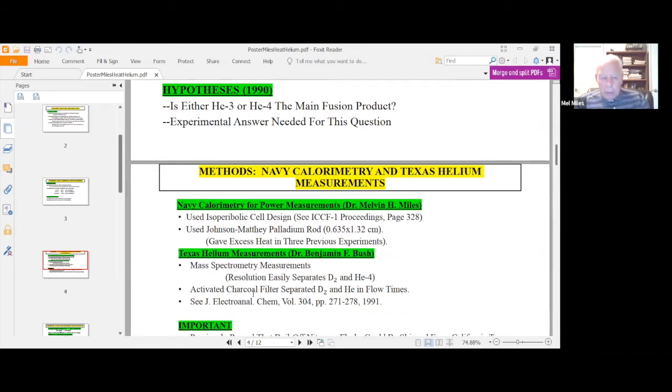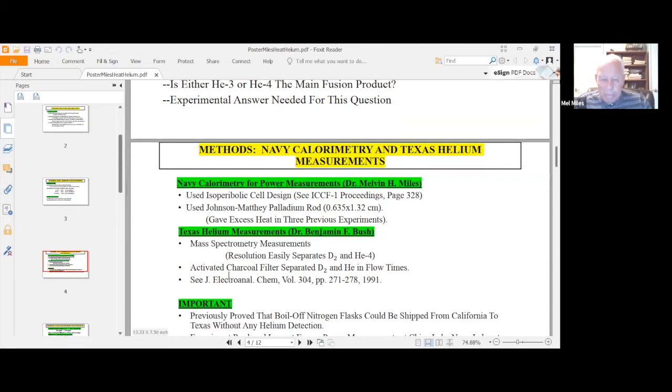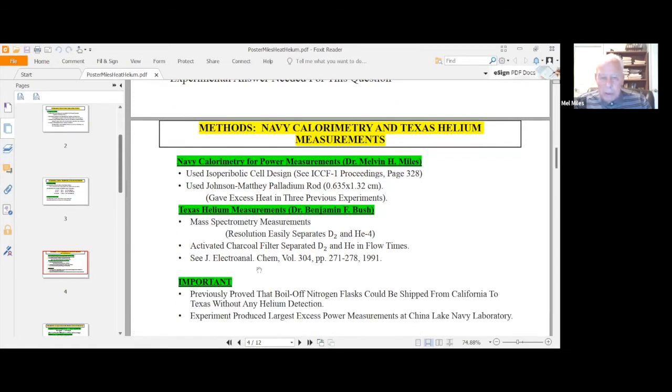And we worked out a method where the mass spec itself could easily separate D2 gas from helium-4 gas. And the activated charcoal filter also separated them in time. Because going through the filter, the D2 got slowed down, and not so much for the helium-4. And this was published in the journal of Electroanalytical Chemistry publication in 1991.